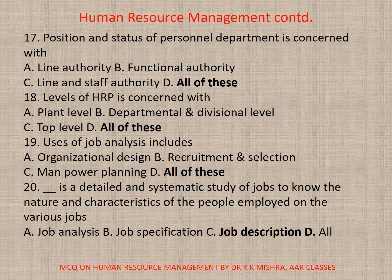Question 16. What is the position and status of personal management? The personal department has: A. Line authority. B. Functional authority. C. Line and staff authority. D. All. The correct option is D. All. Question 17. The tables of HRP are transferred at: A. Plant level. B. Departmental and divisional level. C. Top level. D. All. The correct option is D. All.